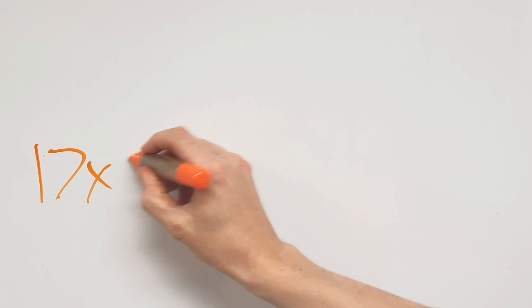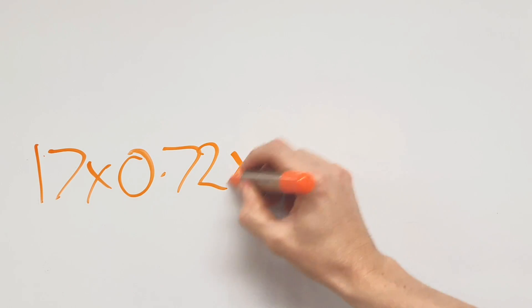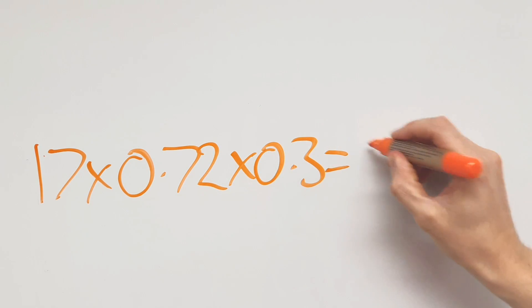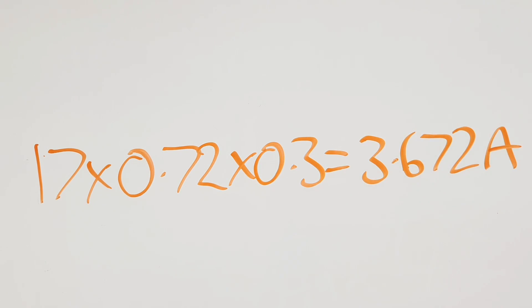So if your tabulated current carrying capacity was 17 amps, multiply it by the grouping factor of 0.72 and by 0.3, and you get 3.672 amps. If the circuit should never draw more than that value of current — for instance if it's feeding a fixed amount of light fittings — then you don't need to include it in your grouping factor calculation.